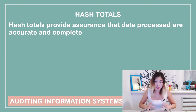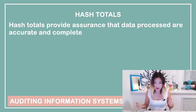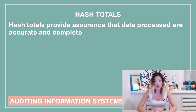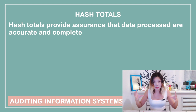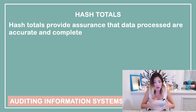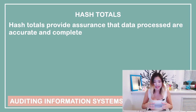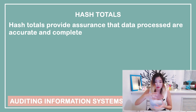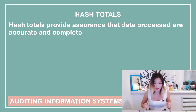Hash totals relate to batch control and balancing, which will be covered in more detail in future videos. For now, let's just say that hash totals provide assurance that data are accurate and complete. It is a type of control that tests whether the total in a batch of records is in line with the total calculated by the system.